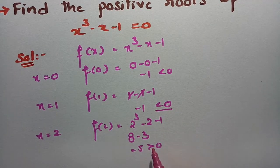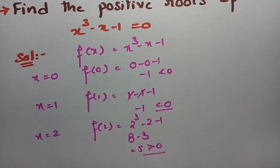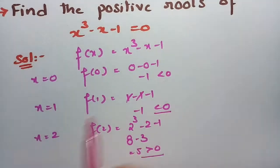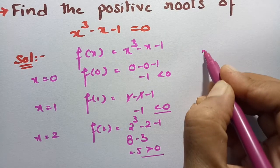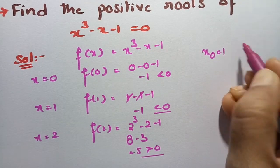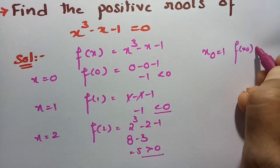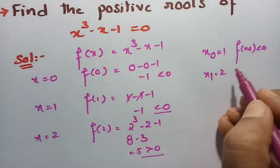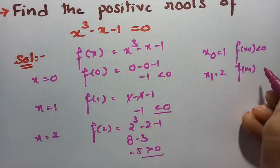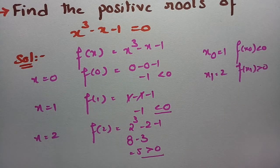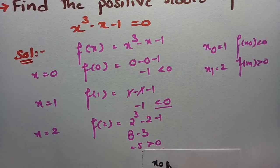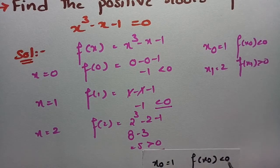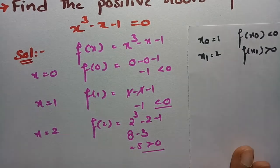Here I got a negative value and here I got a positive value, so we stop substituting. We consider x₀ = 1 with f(x₀) negative, and x₁ = 2 with f(x₁) positive. Since there are different signs, we take these two points for bisection.